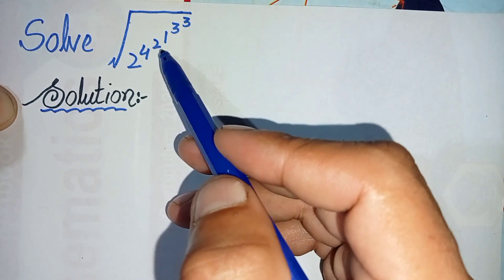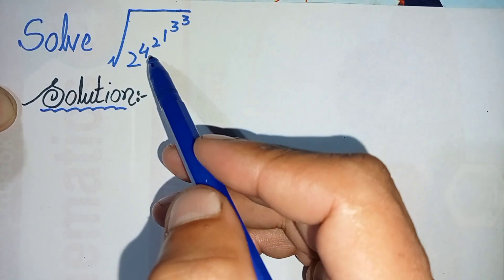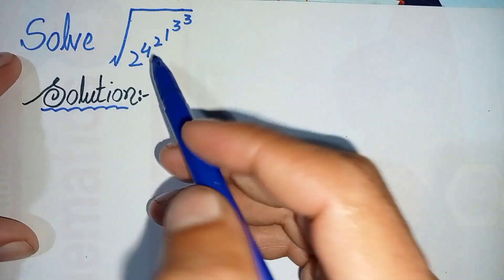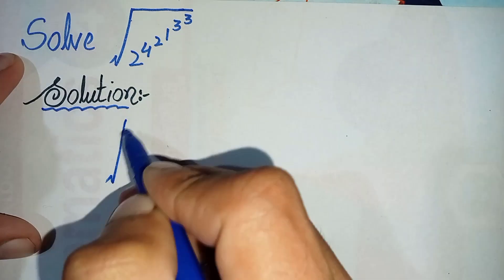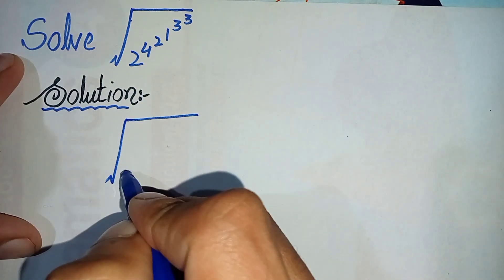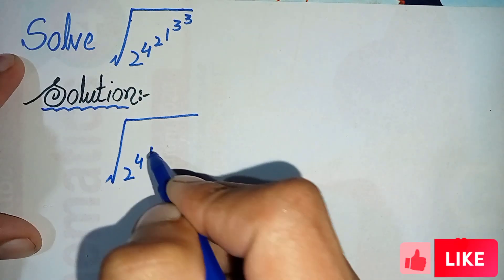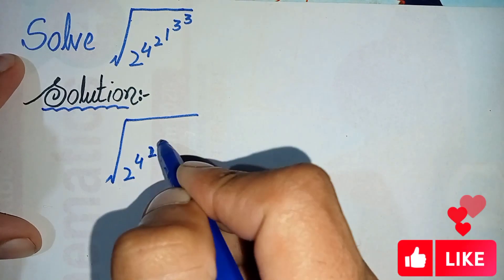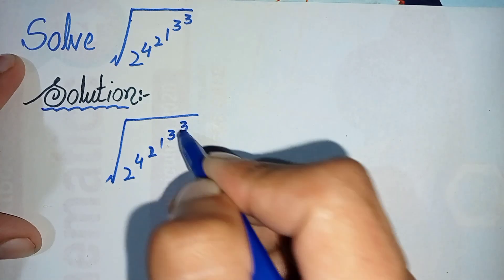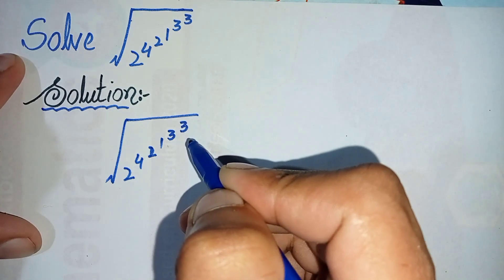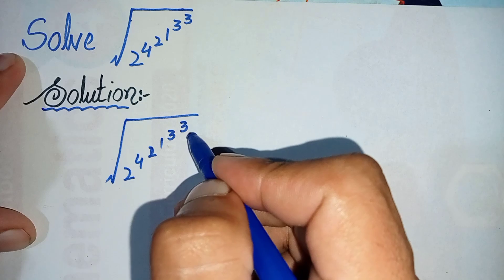To solve this question properly, first we will write the solution and rewrite the question. The question is: square root of 2 raised to power 4, raised to power 2, raised to power 1, raised to power 3, and raised to power 3. We will solve these powers from top to bottom.